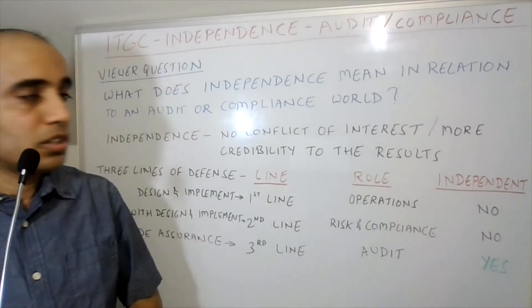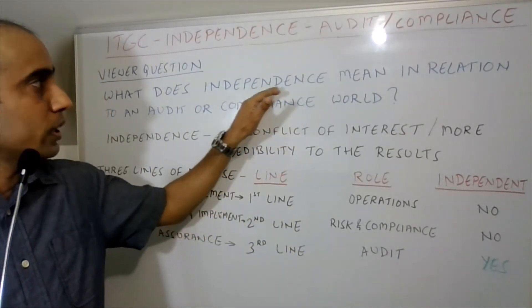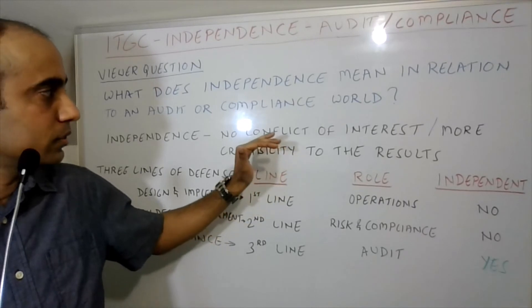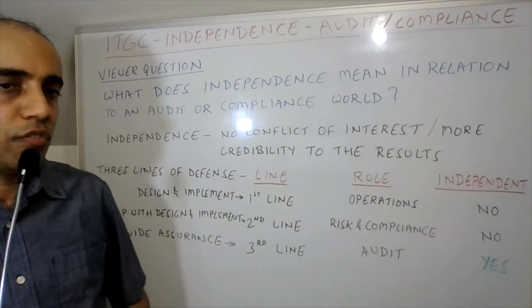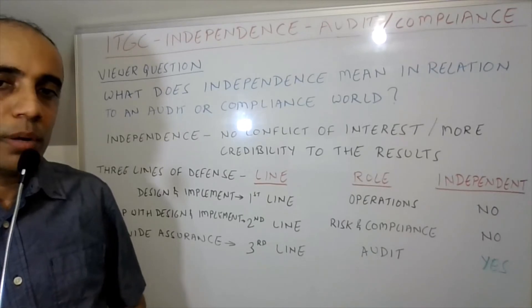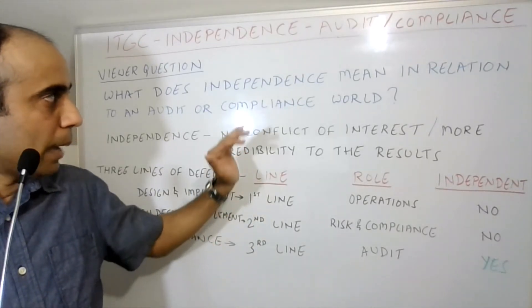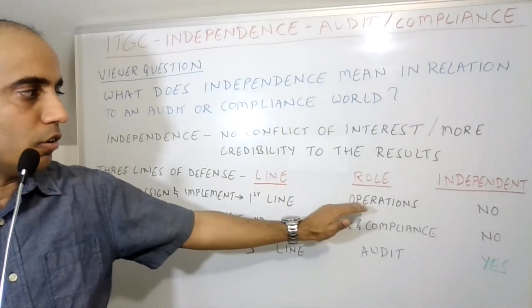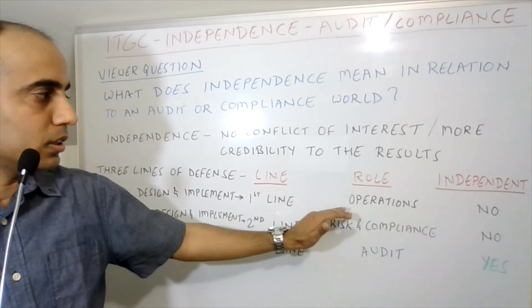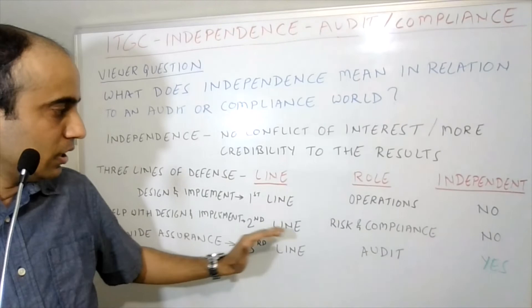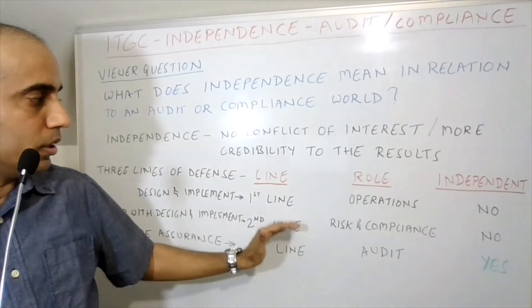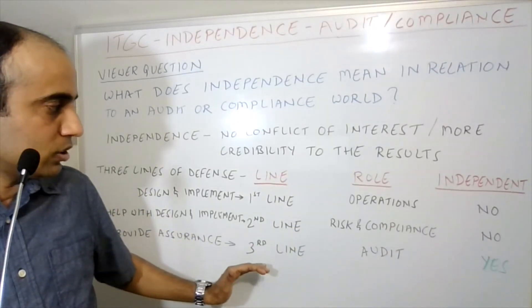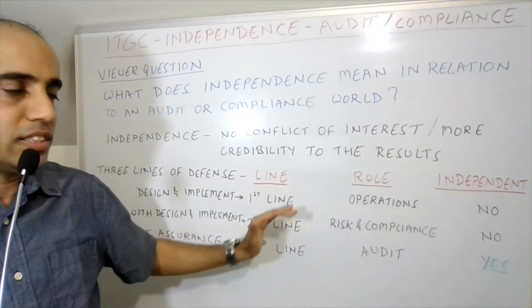So just to recap: the question was what does independence mean in relation to audit or compliance. The simple definition of independence is having no conflict of interest, which adds more credibility to the results. Applying this concept to the three lines of defense: the first line is our day-to-day operations people who design and implement day-to-day processes; the second line helps the first line with design and implementation; and the third line — audit functions — provides assurance across what the first and second lines are doing.